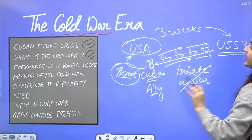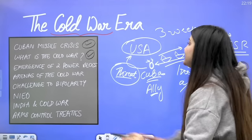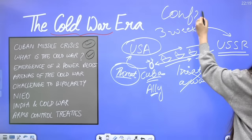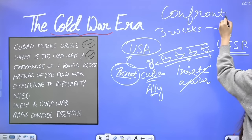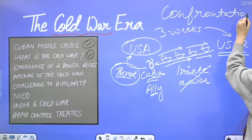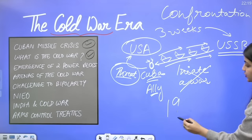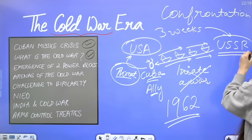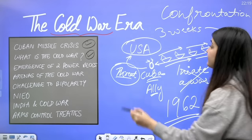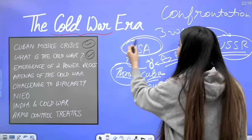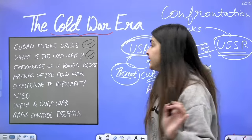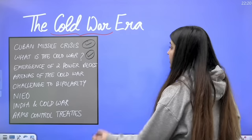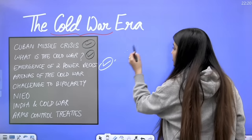USA did not initiate a full war because of the logic of deterrence. USSR's ships backed off and a war was averted. This was a major confrontation. It occurred in 1962. At that time, USSR's leader was Nikita Khrushchev and USA's leader was John F. Kennedy.